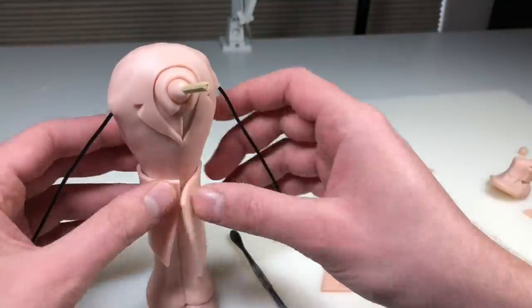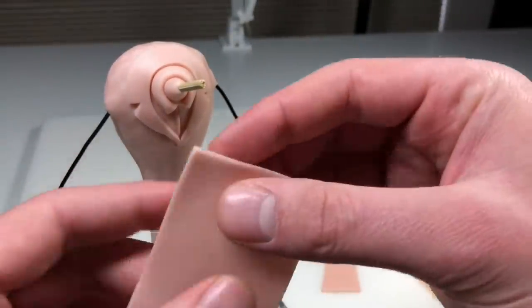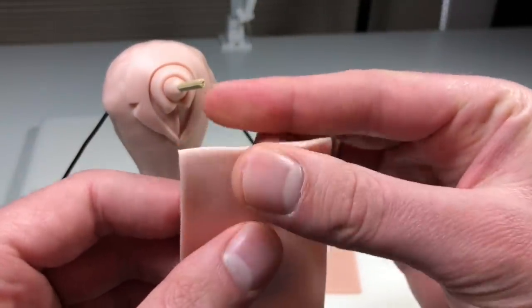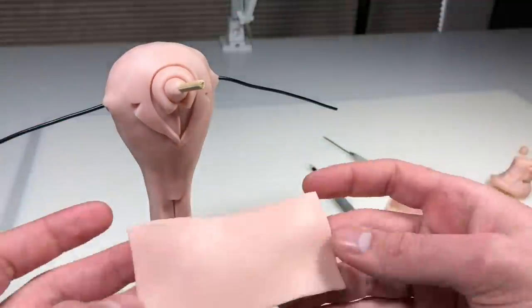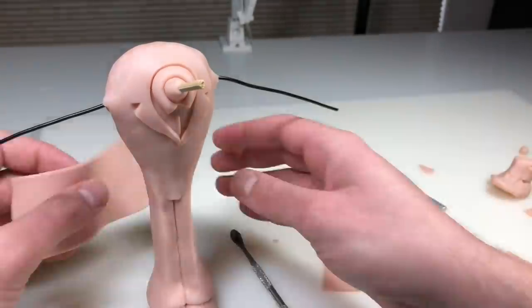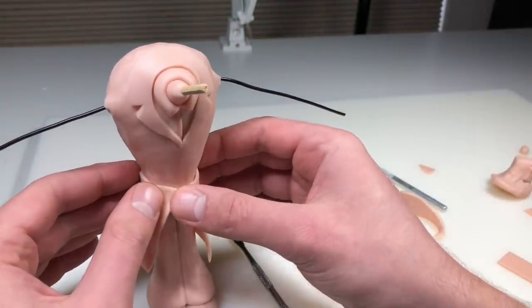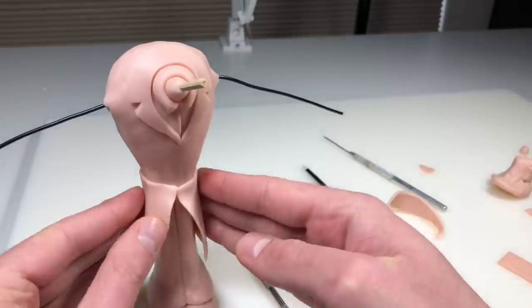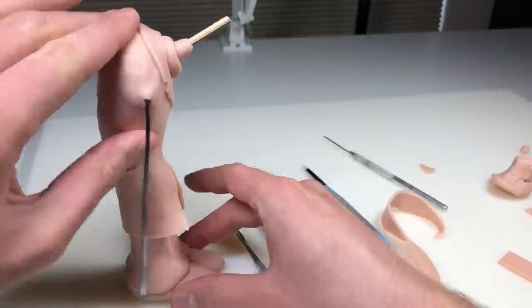Now I'm adding the bottom half of his lab coat. I'm just measuring that out here and pinching the edges a little bit just so they don't have such a harsh edge. Adding that on around his waist, pressing it into place, and then blending the top edge in with the rest of his body.